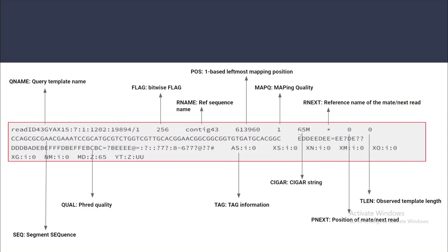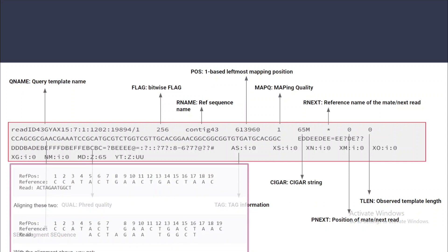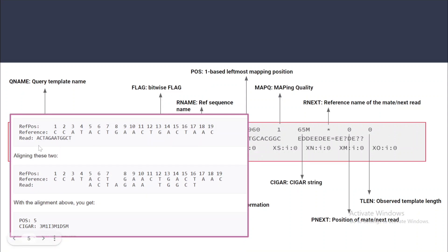The next field is the CIGAR string, which is a shorthand way to encode an entire alignment. In this example, we have the reference sequence and we are mapping a read. The first position of the read maps at the fifth position, so POS equals 5. The CIGAR string is 3M1I3M1D5M: 3M means the first three nucleotides match the reference; 1I means a nucleotide is present in the read but absent in the reference (insertion); 3M again means three bases match; 1D means a base is absent in the read but present in the reference (deletion); and 5M means five more bases match.